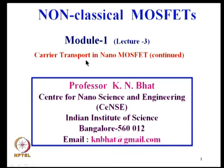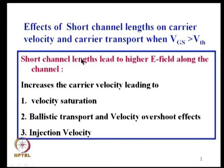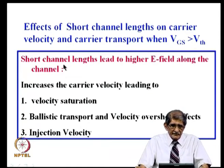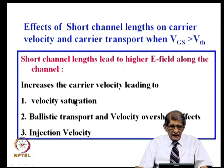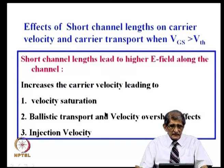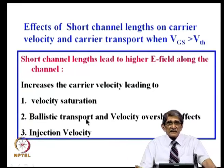We start our third session on carrier transport in nano MOSFET devices and non-classical MOSFETs. We continue on some effects of short channel lengths on carrier velocity. The three aspects we will discuss are: velocity saturation effect on drain current, the implications of ballistic transport and velocity overshoot effect, and injection velocity which ultimately controls the drain current in short channel devices.